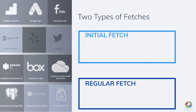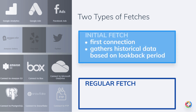There are two types of data fetches that TapClix makes, and this distinction is important. The initial fetch happens when you first establish a connection to a source. The first time that you attach the account to TapClix, the initial fetch will gather historical data. In TapClix, historical data is also called the look-back period, or simply look-back.